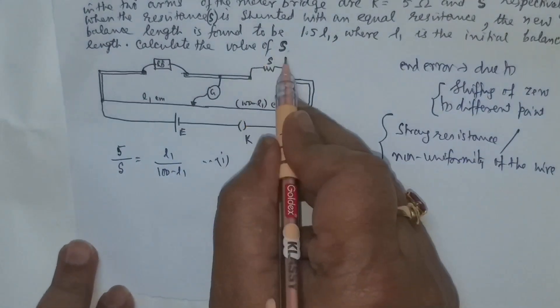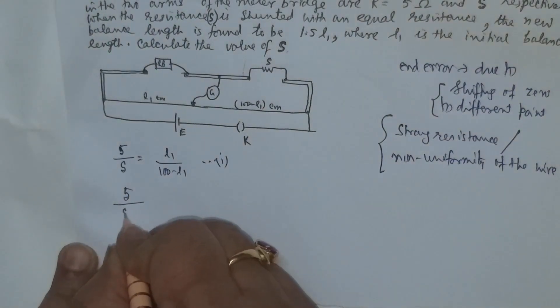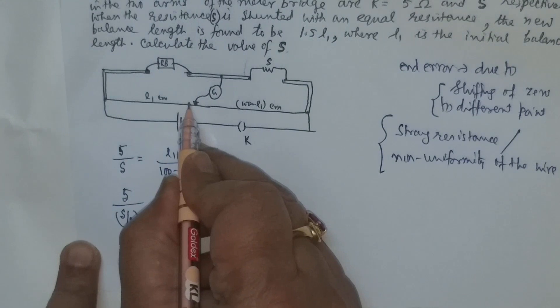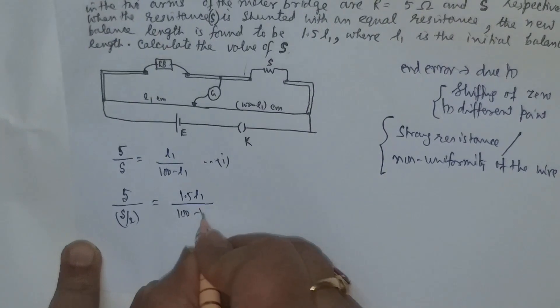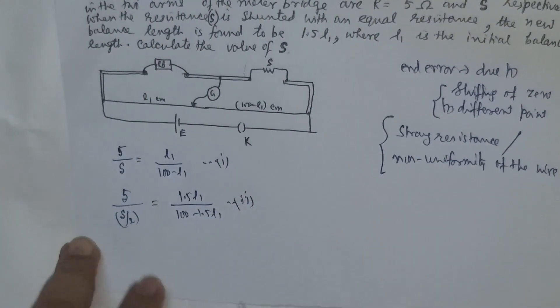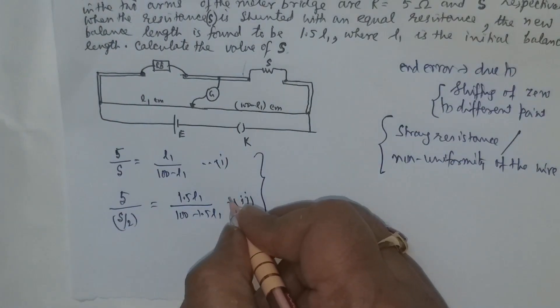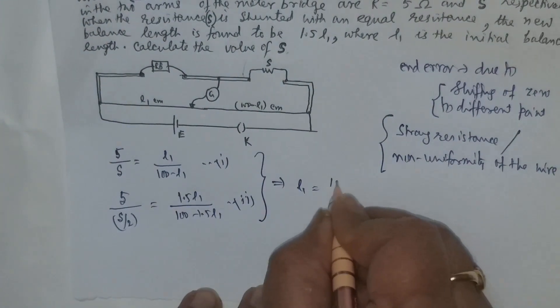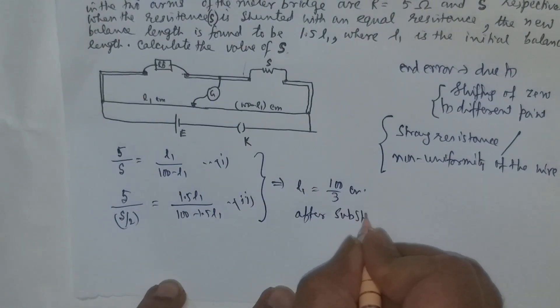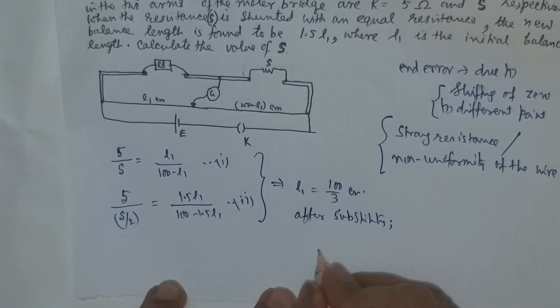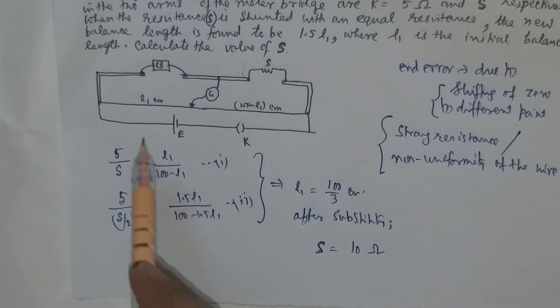When I shunt this S with another resistance in parallel it becomes S by 2. So 5 divided by S by 2, and this L1 becomes 1.5 L1. This becomes 100 minus 1.5 L1. Now we solve for L1. After solving we get L1 equals 100 by 3 centimeter and after substituting this L1 we get S equals 10 ohm. Students are advised to check the answer by putting them in the respective equations.